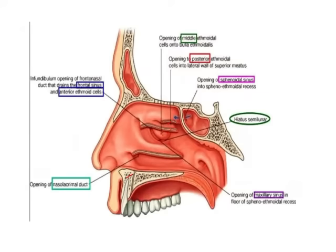On top of the superior concha you have the base of the skull, and this is the sphenoid bone. Here you have a small recess called the sphenoethmoidal recess.